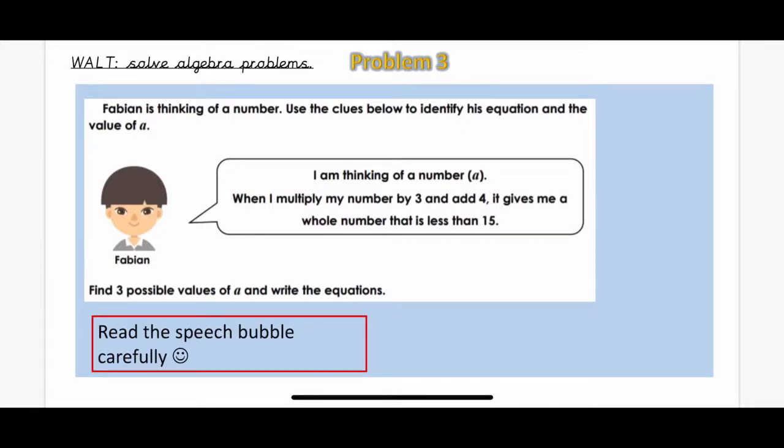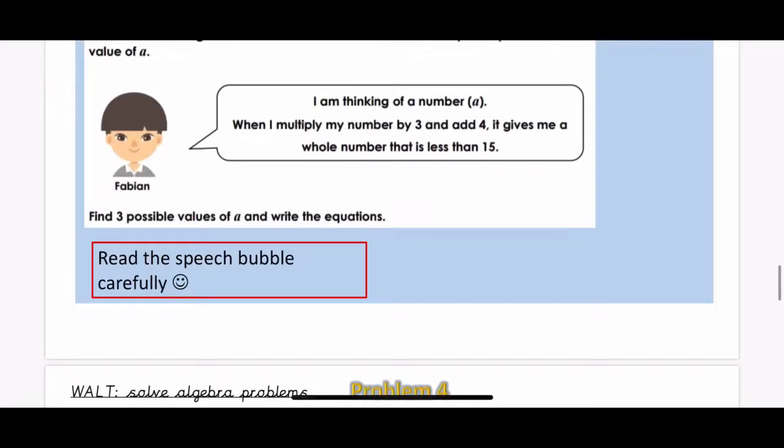Okay, so for problem 3 then, it says I'm thinking of a number and that number is called A. When I multiply my number by 3 and add 4, it gives me a whole number that is less than 15. So you've got 3 lots of A and then add 4, and your total is still less than 15. Have a think about what numbers that could be for the value of A.